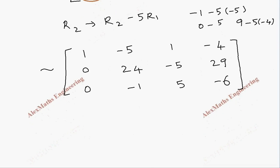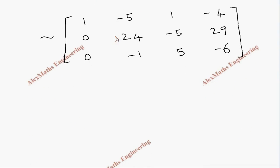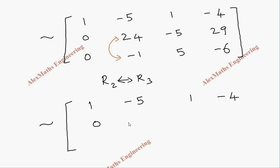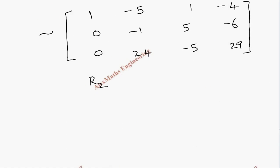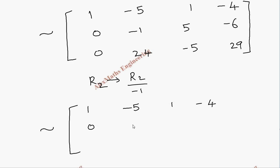To make the process easier again, let's interchange row 2 and row 3. The augmented matrix becomes: row 1 as it is, row 2 is [0, -1, 5 | -6], and row 3 is [0, 24, -5 | 29]. Now we divide row 2 by -1, so row 2 changes sign to [0, 1, -5 | 6], while rows 1 and 3 are written as they are.